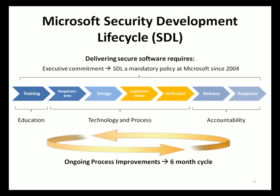In the requirements phase, requirements for security and privacy must accompany functional requirements of the software being created. Such requirements may include the use of encryption, authentication, and other security measures based on the business requirements, exposure, and sensitive data. A security and privacy risk analysis is performed at this stage. In addition, the threshold for security and privacy, or bug bar, is defined during this phase to ensure that bugs with certain severity are addressed and resolved before the software is officially released.